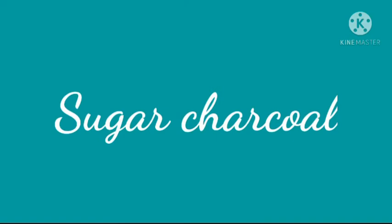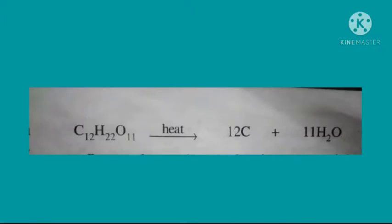Sugar charcoal is the purest form of amorphous carbon because it contains no impurities. It is prepared by heating cane sugar or glucose in the absence of air. The chemical equation is: C₁₂H₂₂O₁₁ → 12C + 11H₂O. Sugar charcoal can also be prepared by the dehydration of cane sugar or glucose in the presence of concentrated sulfuric acid, which removes the water and leaves behind the carbon.